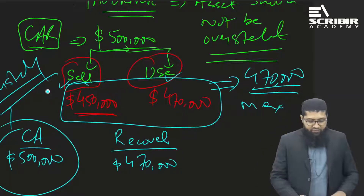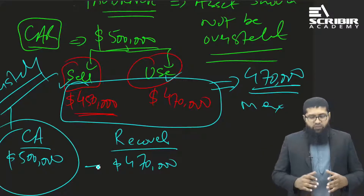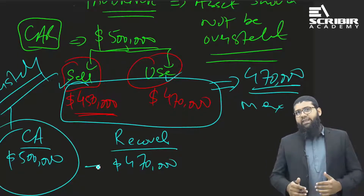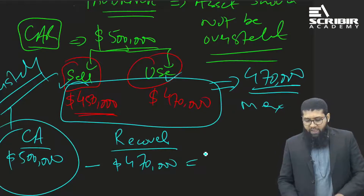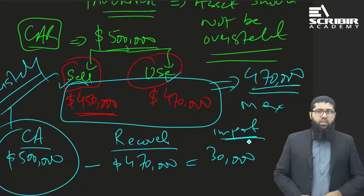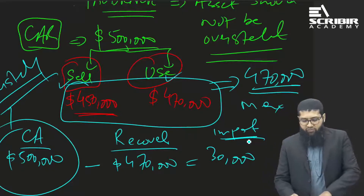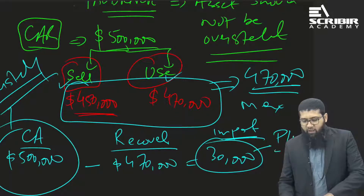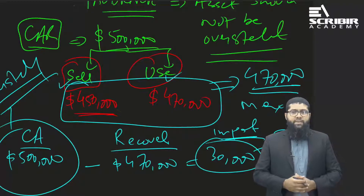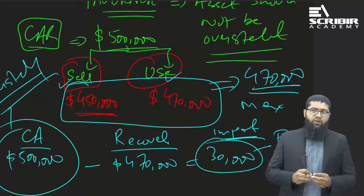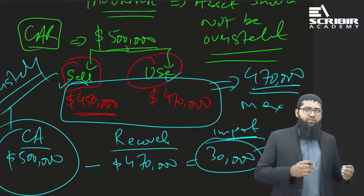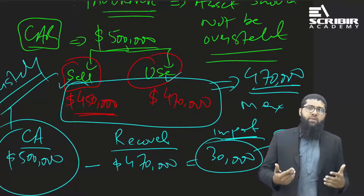If there is a situation where the carrying amount of five hundred thousand exceeds the recoverable amount of four hundred and seventy thousand, then an impairment loss of thirty thousand has arisen. You need to write down the asset by thirty thousand and recognize this loss of thirty thousand in the P&L. The logic for impairment is that it is in line with the principle of prudence, which says assets should not be overstated.